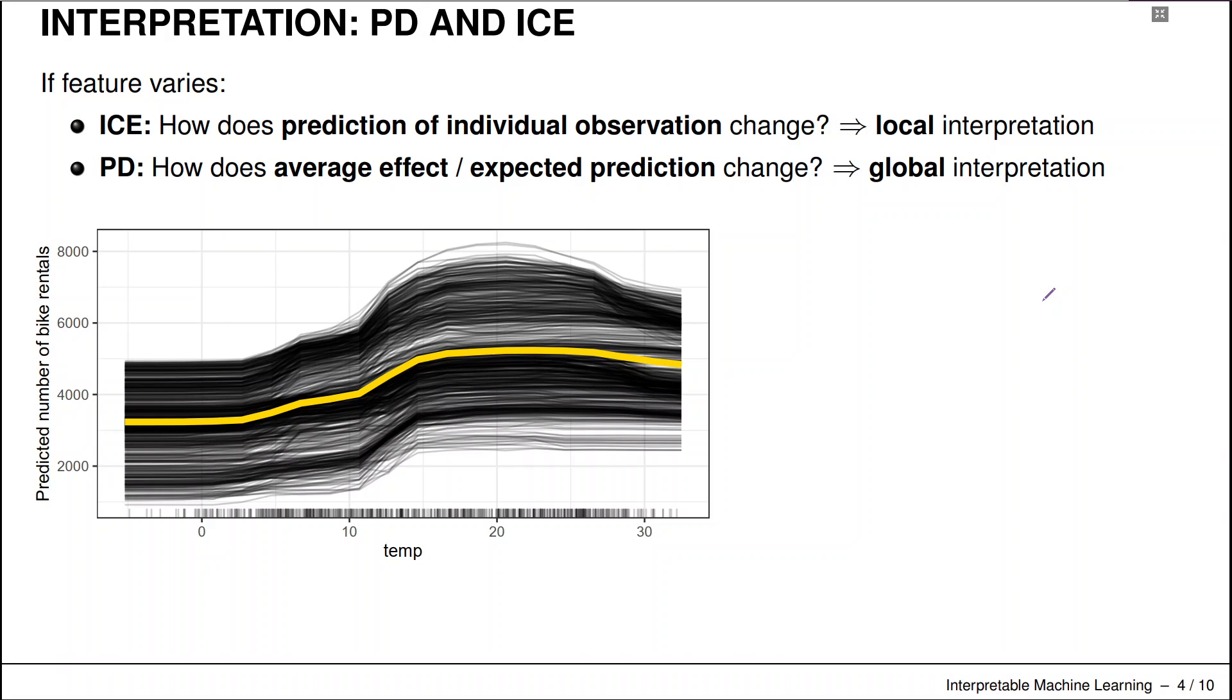So the partial dependence function gives us an average effect. So how does our prediction change on average, or how does the expected prediction change if we change x1. And the ICE curve, as we already discussed, gives us a local interpretation. If we are at a certain point x star and we change our feature x1 or temperature feature here in the bike sharing data set, how does the prediction for that individual observation change.